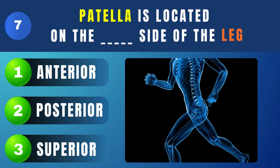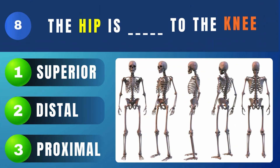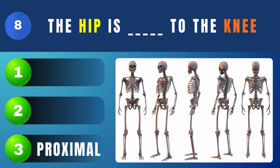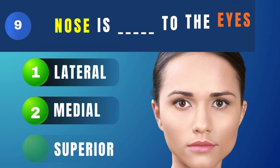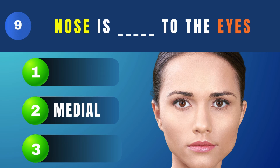The patella is located on which side of the leg? Anterior. The hip is what to the knee? Proximal. Nose is what to the eyes? Medial.